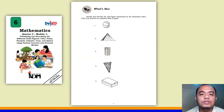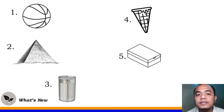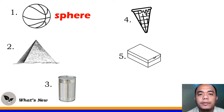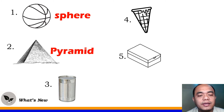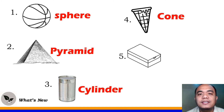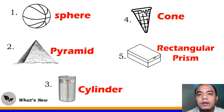This time, let us proceed to the 'What's New' part of the module. On this activity, we will still identify what type of solid figure is shown in each item. Number 1 — that's a sphere. Ball is a sphere. Number 2 — a pyramid. Number 3, a can — cylinder. Number 4 — a cone. Number 5, a shoebox — a rectangular prism.